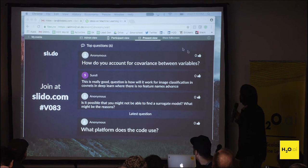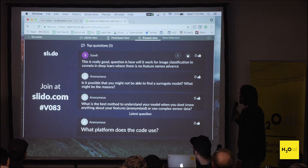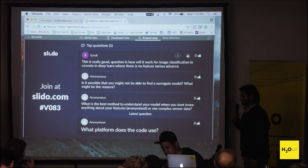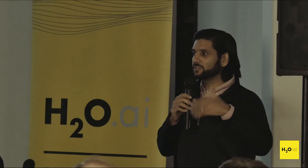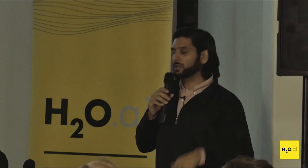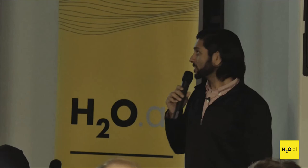The next question is how will MLI work for image classification in convolutional neural nets where there are no feature names in advance? When I think of image classification, I'm not sure if many people are after interpreting it — they're more after accuracy. Most of the problems we've dealt with in MLI are very business related: fraud, churn, default — things where there's value in interpreting. If you don't really know what the feature names are, then interpreting is going to be quite difficult.